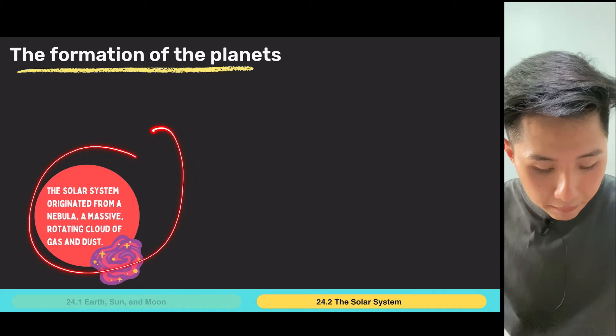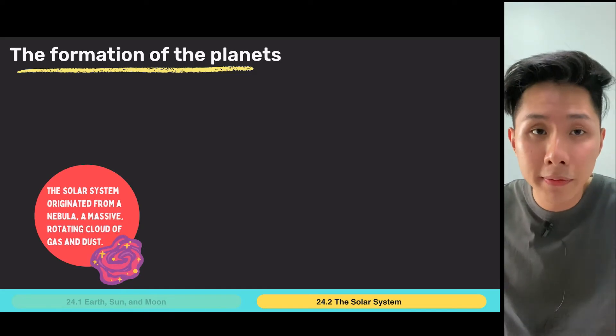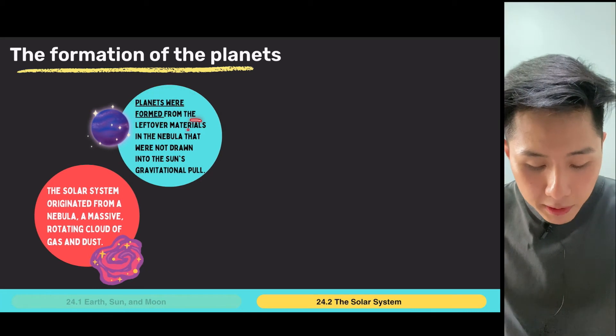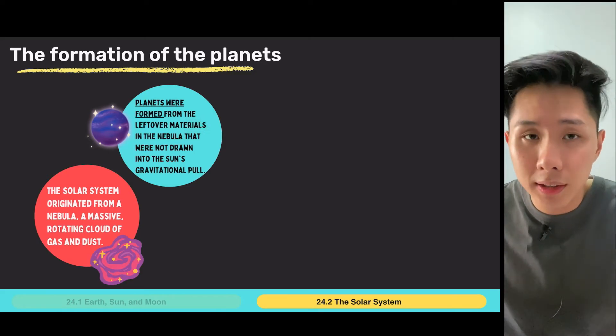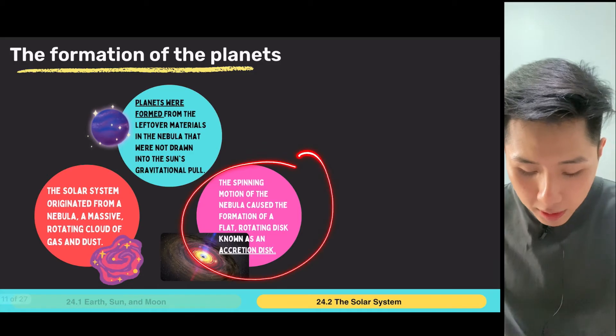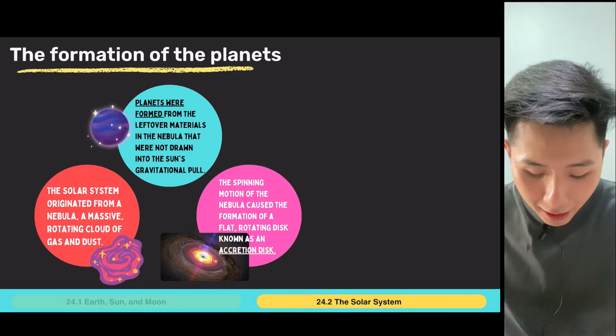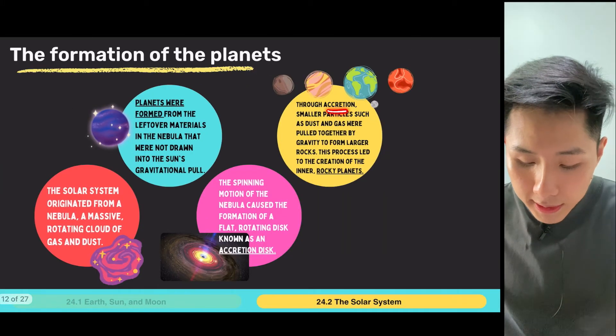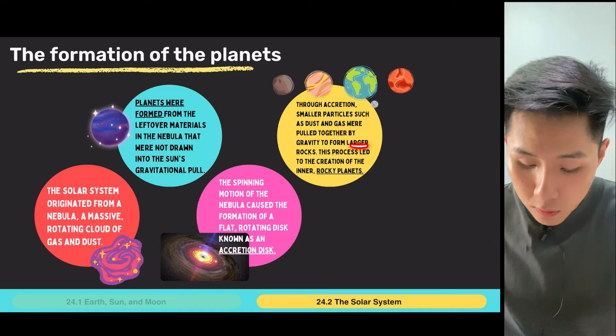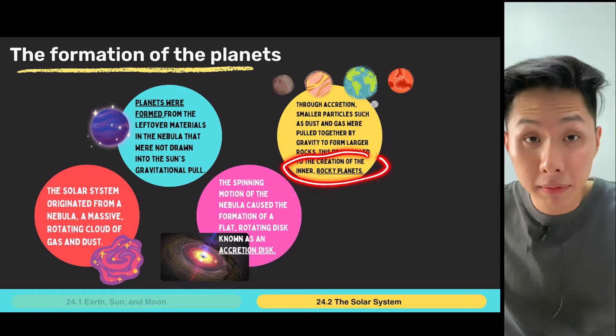So first of all, the solar system originated from a nebula, which is a massive rotating clouds of gas and dust. So everything comes from gas and dust. And what happens is that planets will then form from the leftover materials in the nebula that will not drain into the sun, that are not attracted into the sun. They remain there and slowly they accumulate and they form the planets. And the spinning motion of the nebula caused the formation of a flat rotating disk. So something like that before all the planets are formed. So this is called an accretion disk. And through accretion, smaller particles such as dust and gas were pulled together by gravity to form larger rocks.